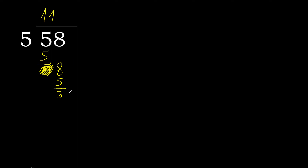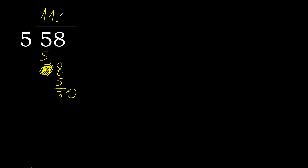There is no next number, so we are not complete — we continue with a decimal point. Always complete with 0, so here with a point: 0 point. 30 — 5 multiplied by 6 is 30. 30 minus 30 is 0. Therefore finish.